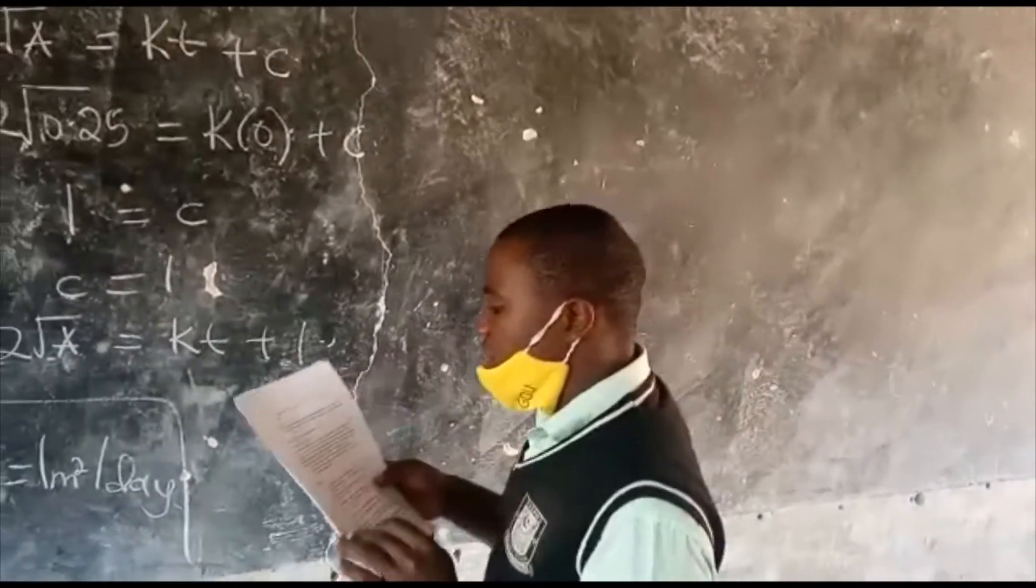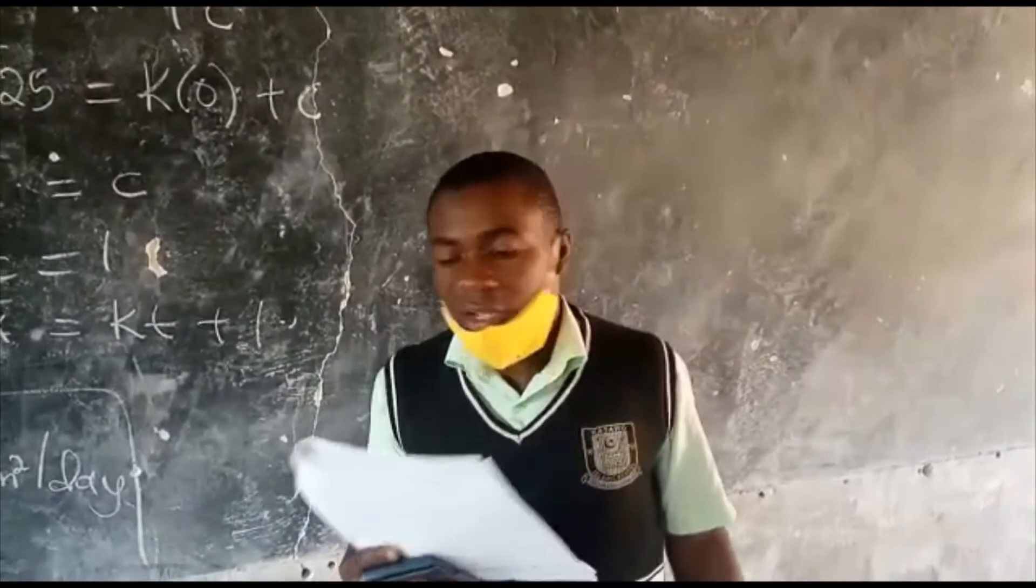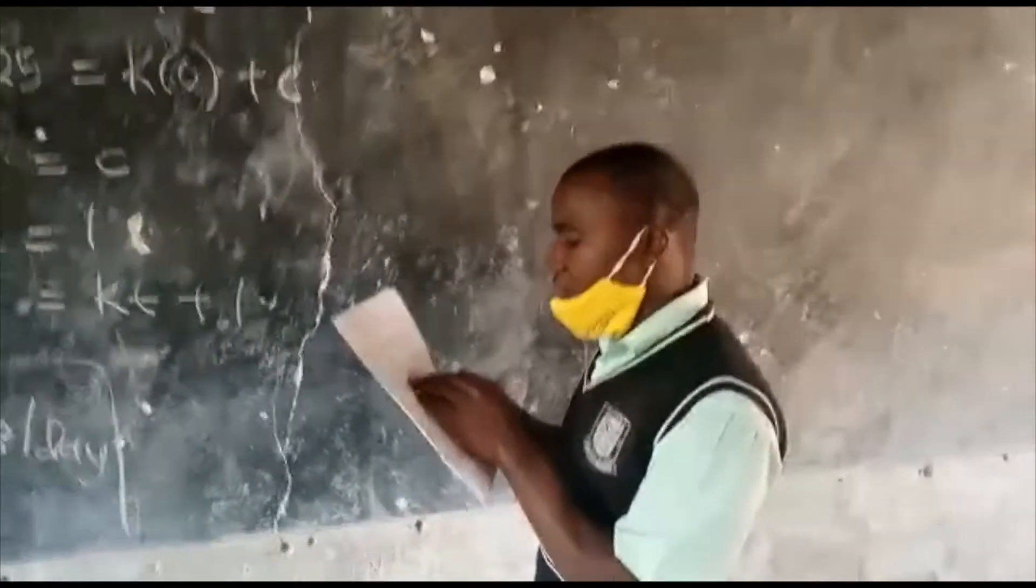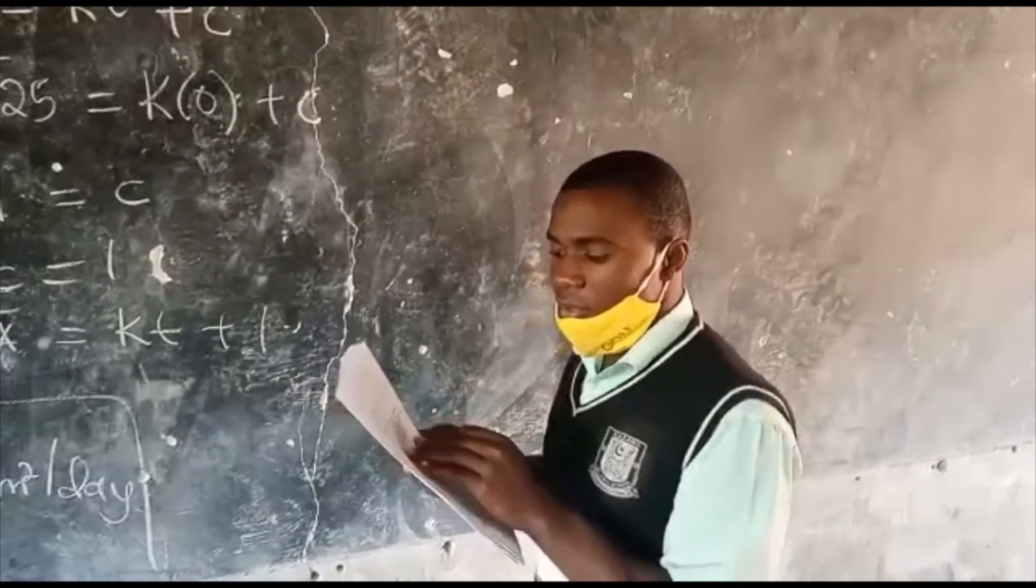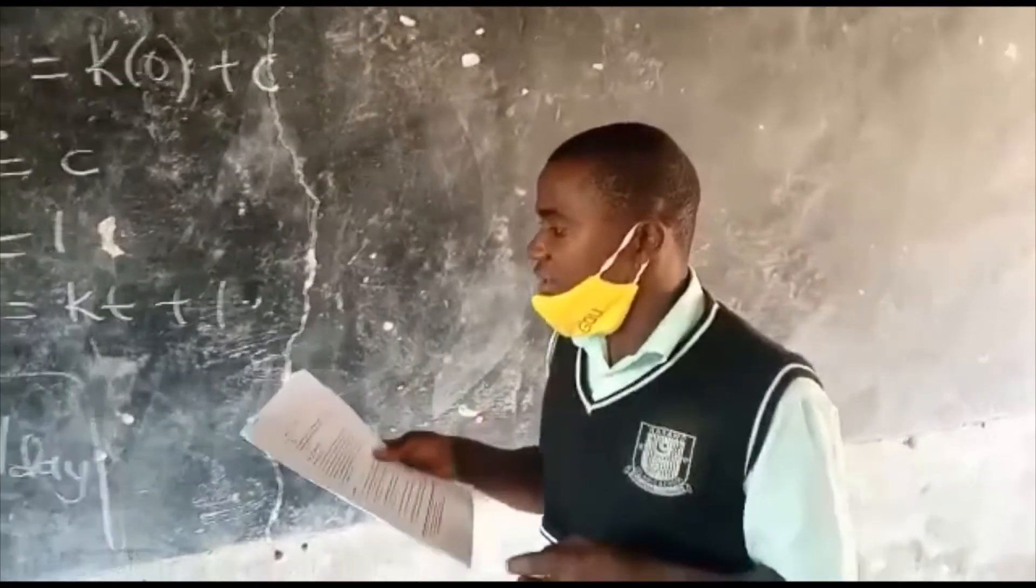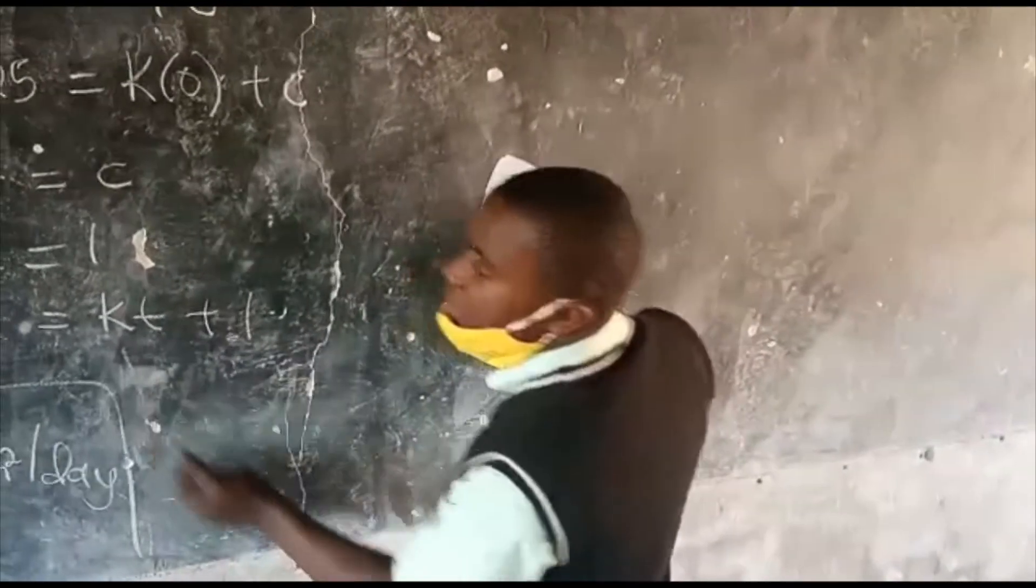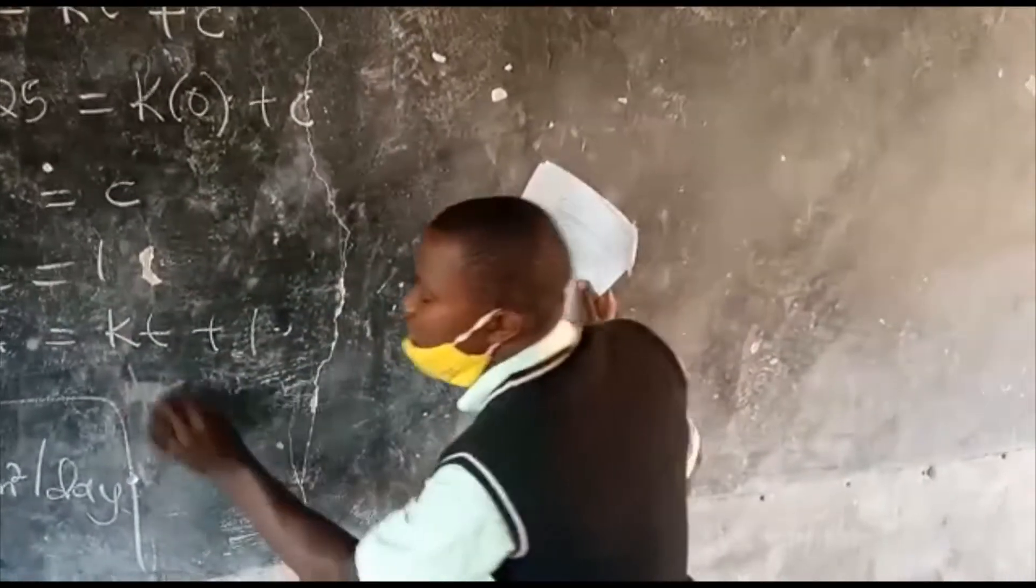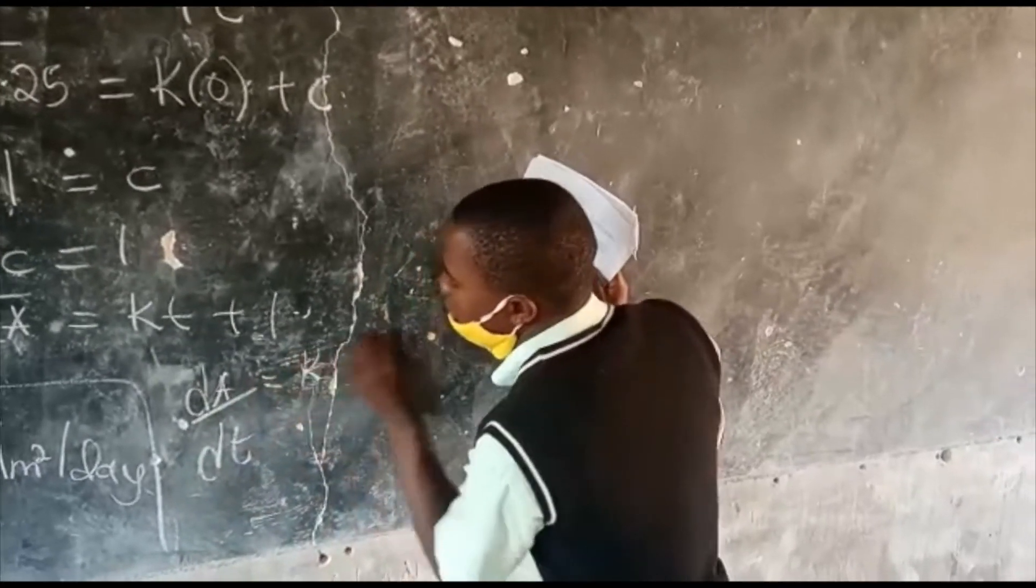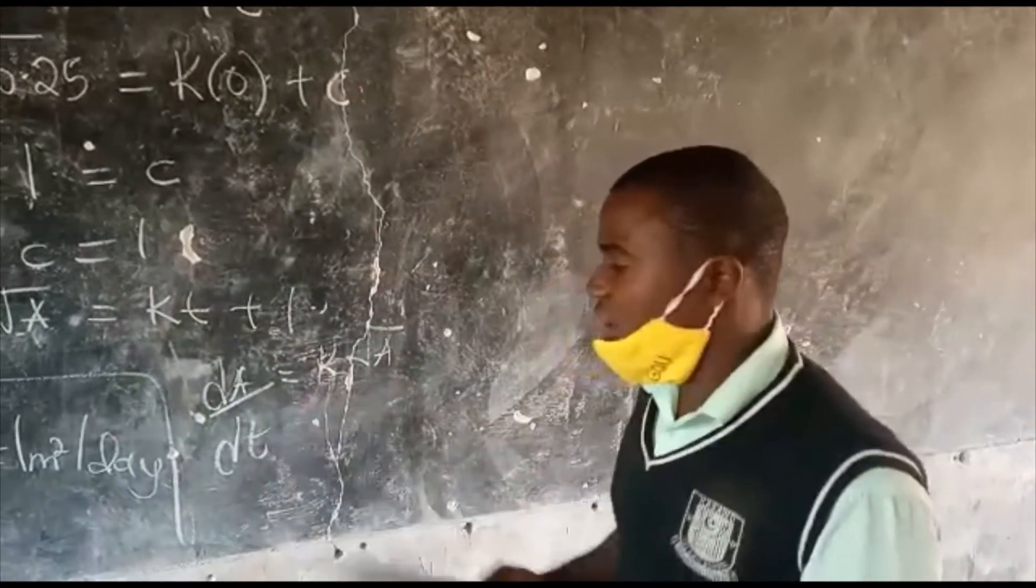Deduce to the nearest day the time taken for the pond's surface area to be completely covered by the weed. But initially, the area covered by the weed is 0.25 meters squared, and its rate of growth per day is 1 meter squared. From the DE which was formed, dA over dT equal to k root of A, I am going to use this equation to find the value of the constant k.